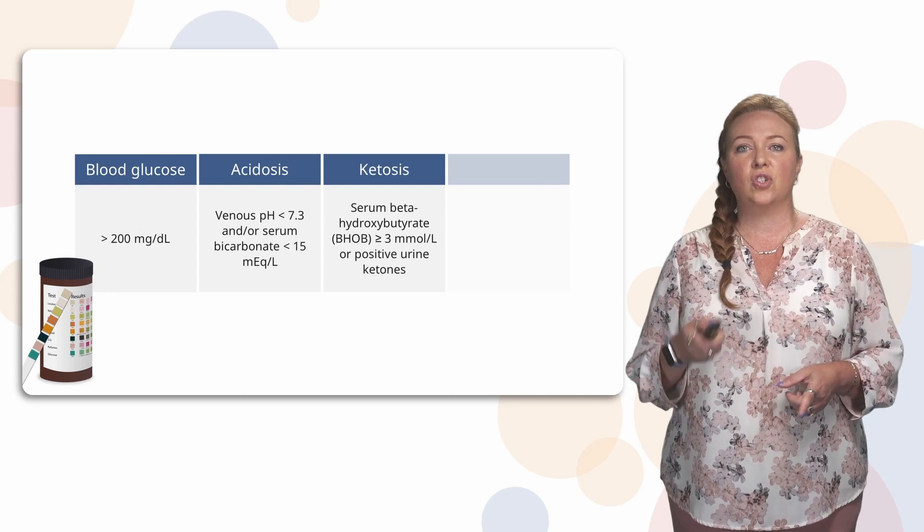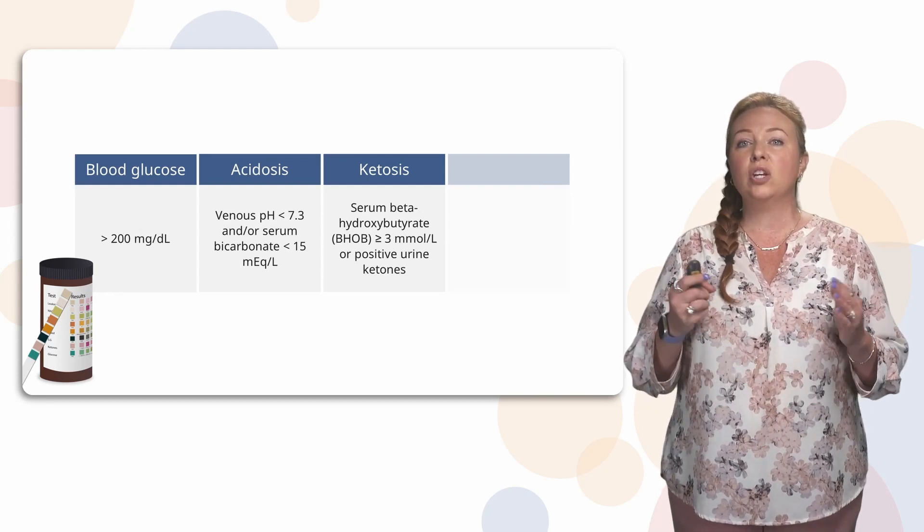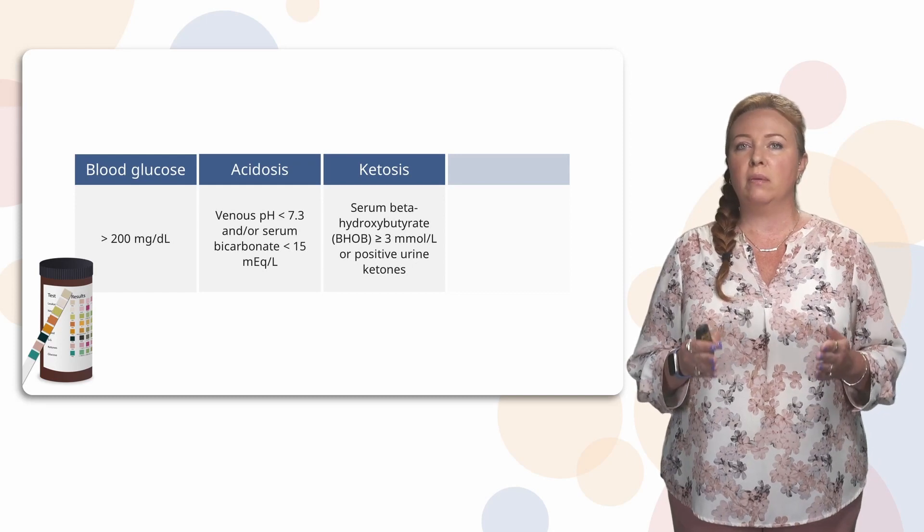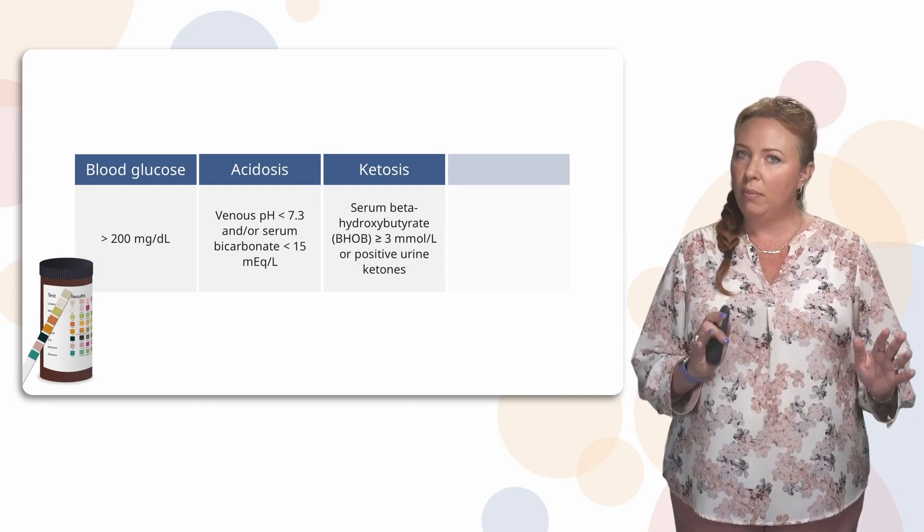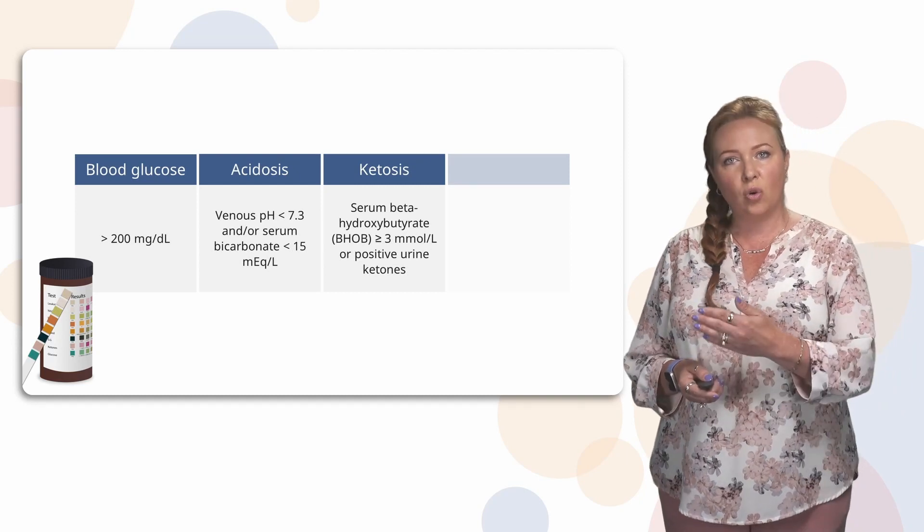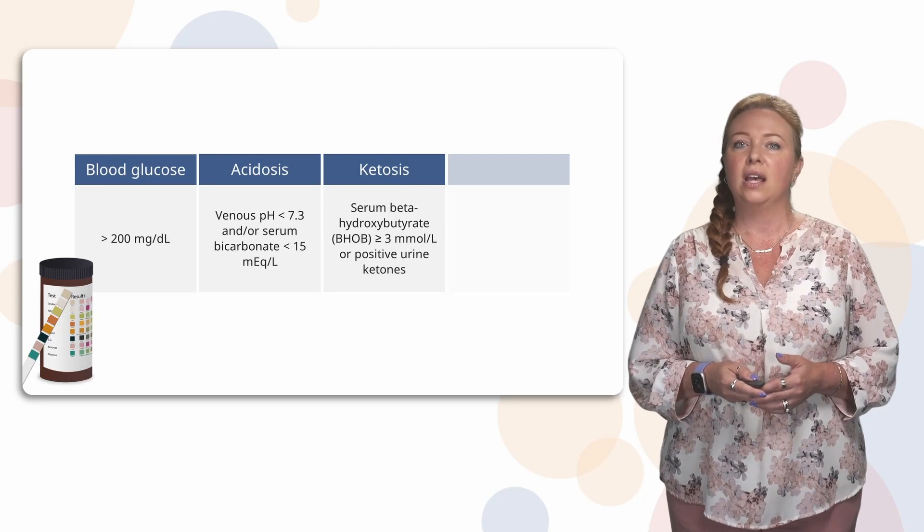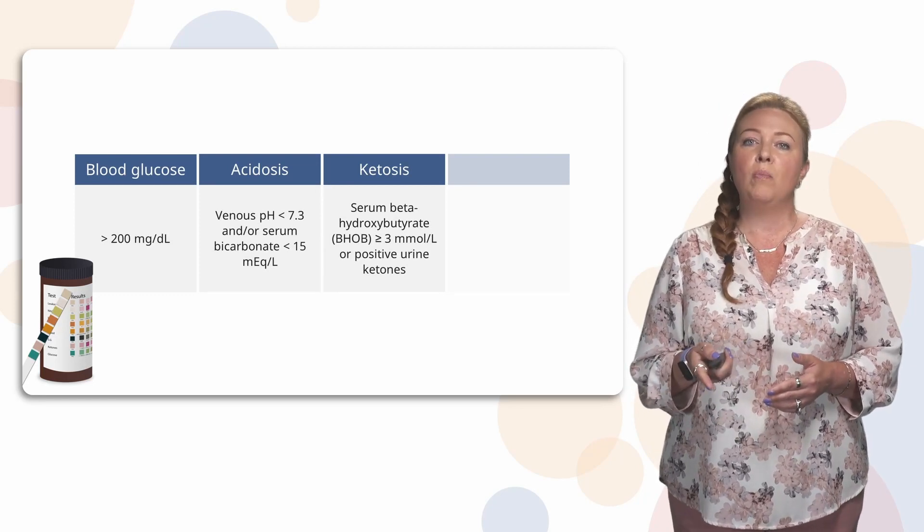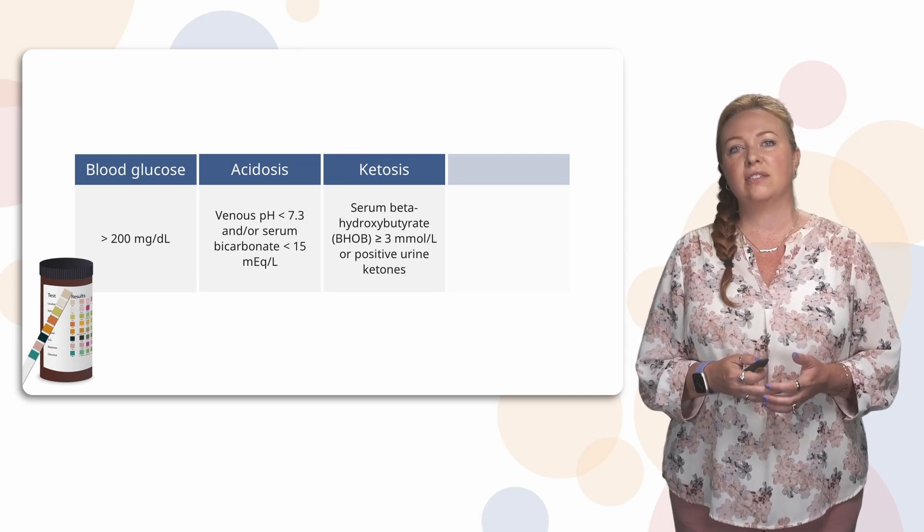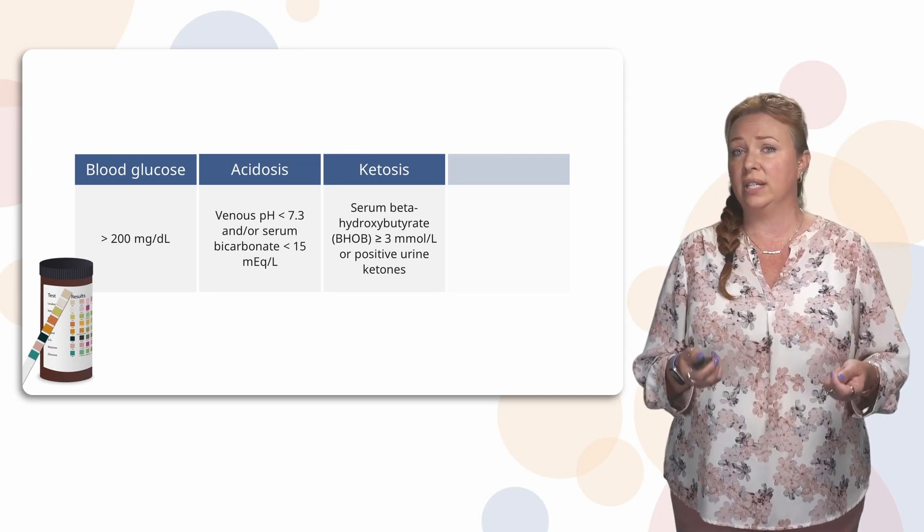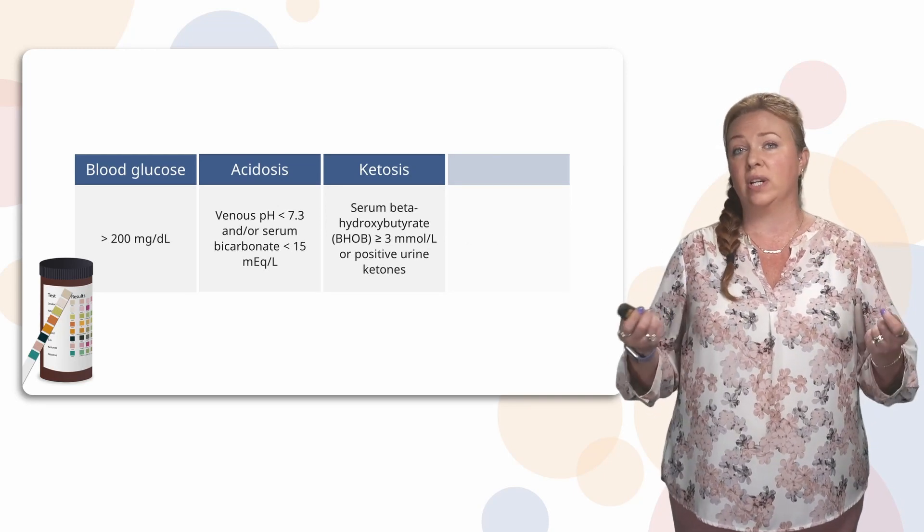That ketosis, so your serum beta-hydroxybutyrate, is going to be greater than 3 millimoles per liter. So anything less than that and you're probably doing okay. But when you get greater than 3, your body is going into that ketosis state. Additionally, you might not be able to get a serum beta-hydroxybutyrate. And so if you have a urine dipstick, you can see if you have positive urine ketones.